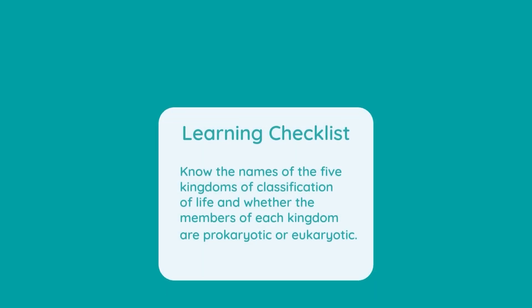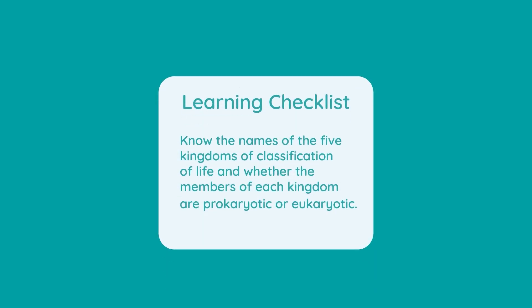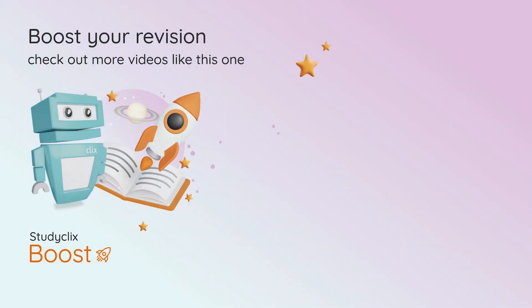Here's what you usually need to be able to do: know the names of the five kingdoms of classification of life and whether the members of each kingdom are prokaryotic or eukaryotic.